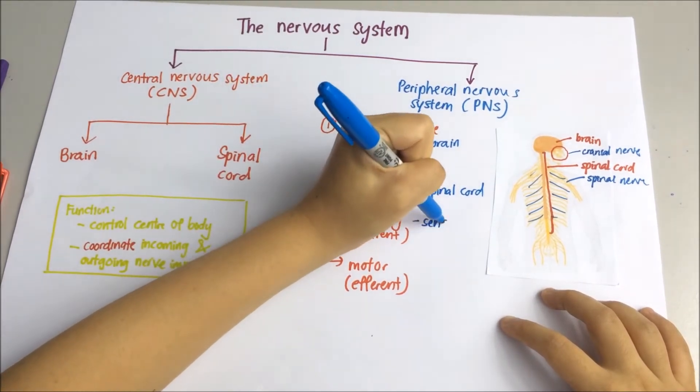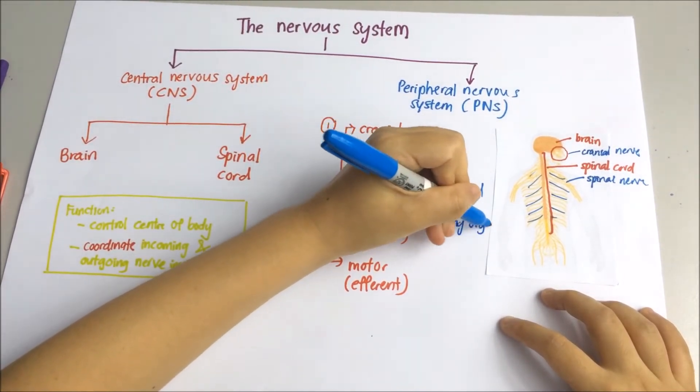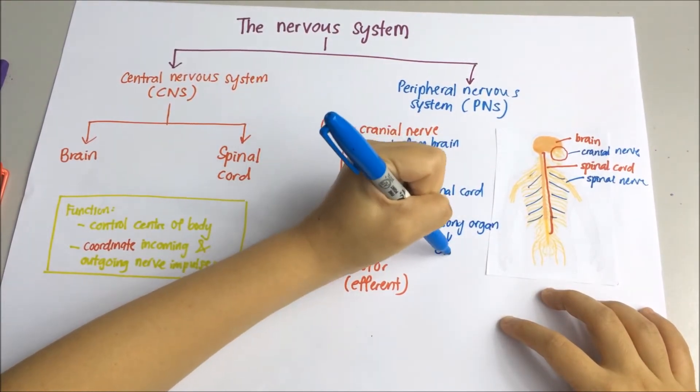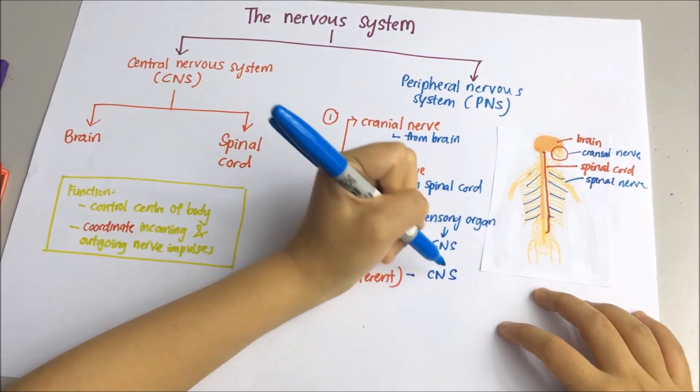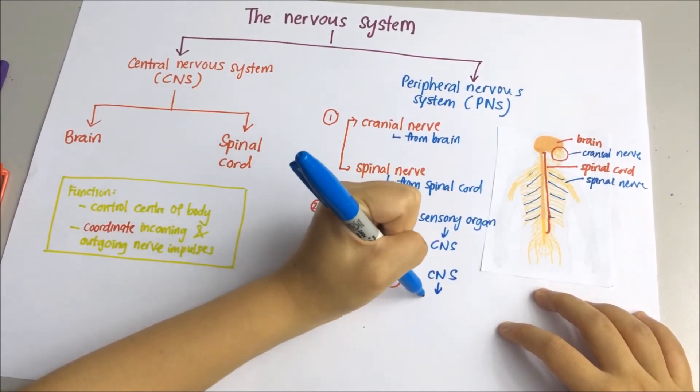Sensory neuron will carry the electrical impulses from sensory organ to central nervous system. For example, it sends what you see from the eyes to the brain.